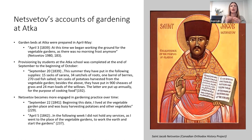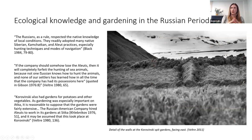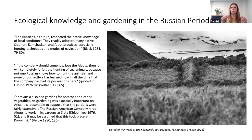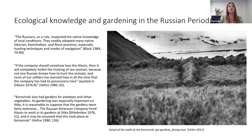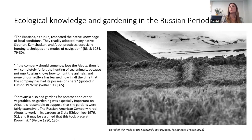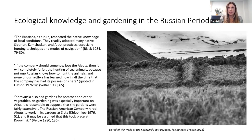Interestingly, Netsvotov becomes more engaged in gardening practice over time. In the 1840s he starts talking about living at the vegetable garden place, harvesting potatoes, not holding services because he was at the gardening place. Regarding ecological knowledge and gardening in the Russian period: how can we be so certain that the Russians brought all agricultural technology to the Aleutians? Because they deferred largely to the Unangax for all other forms of ecological knowledge. As Black notes in 1984, 'The Russians, as a rule, respected the native knowledge of local conditions,' extending from hunting techniques to modes of navigation to architecture.